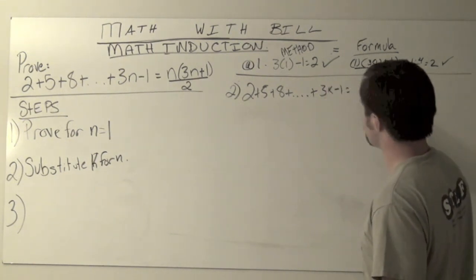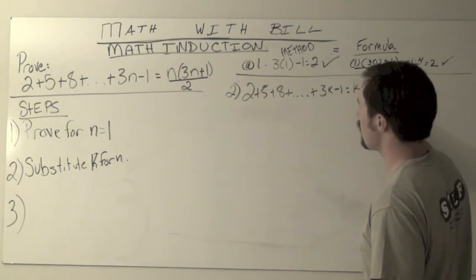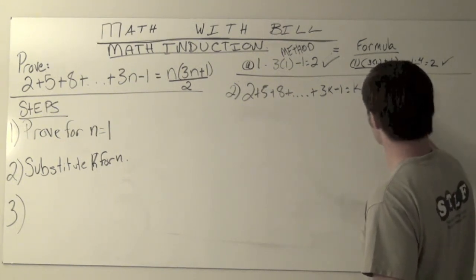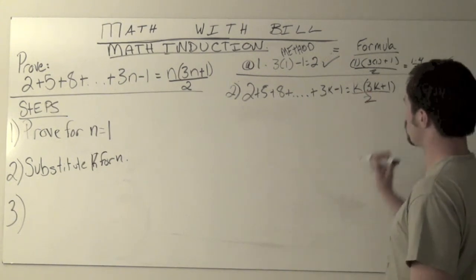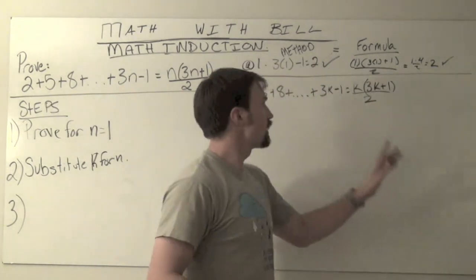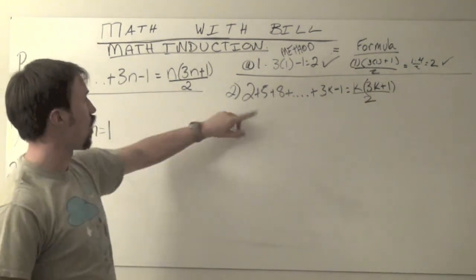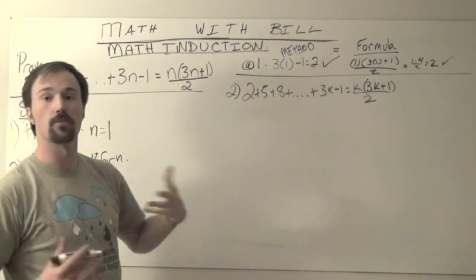3k minus 1 is supposed to be equal to k times 3k plus 1, which is a quantity all divided by 2. This I've simply taken and substituted—all of the n's have now become k's.